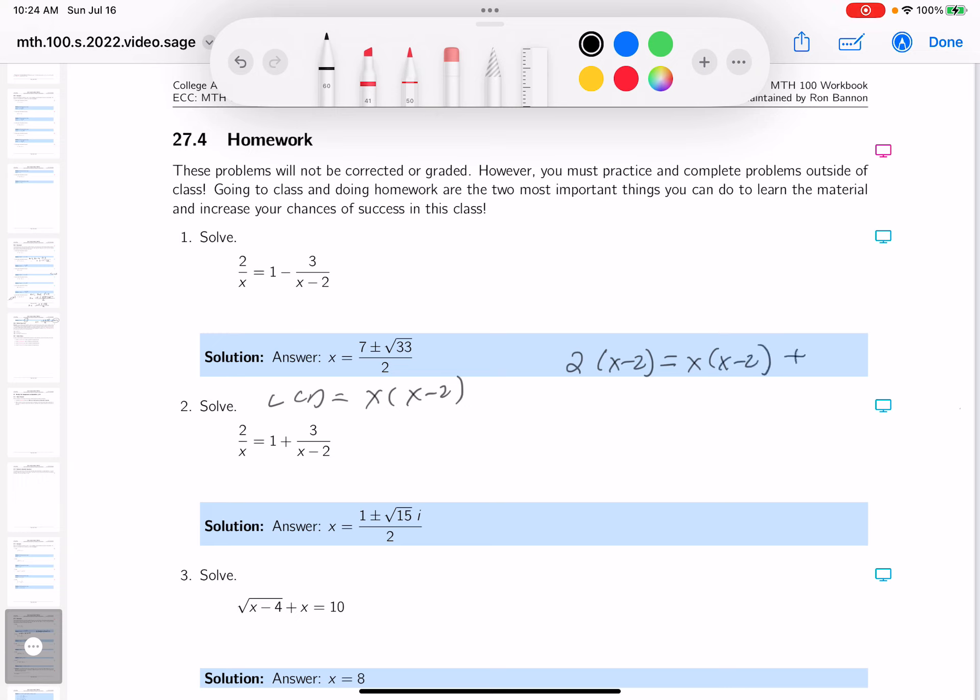So, plus, you still get a three, x minus two disappears, you get an x. 2x minus four equals x squared minus 2x plus 3x.